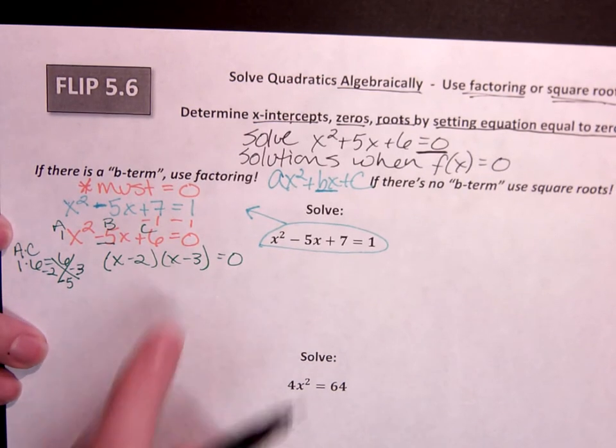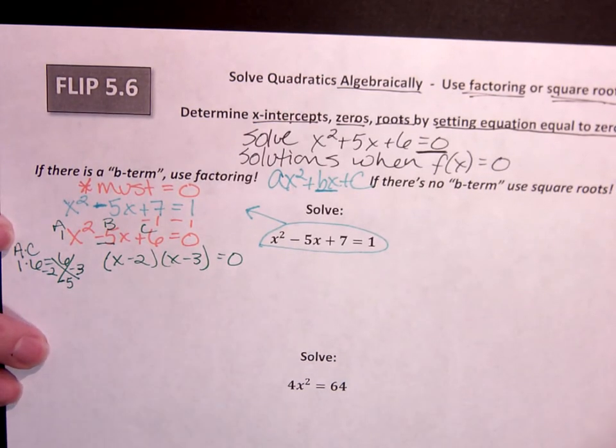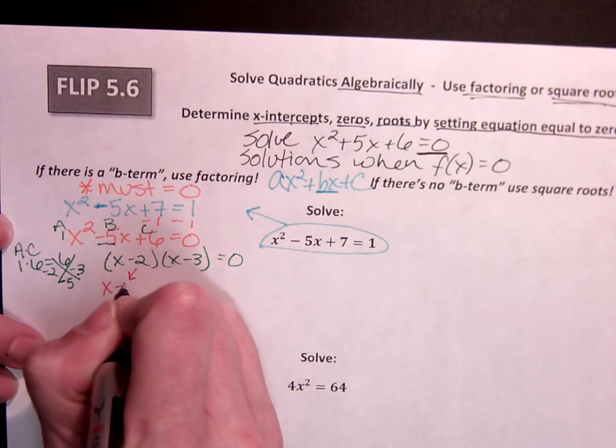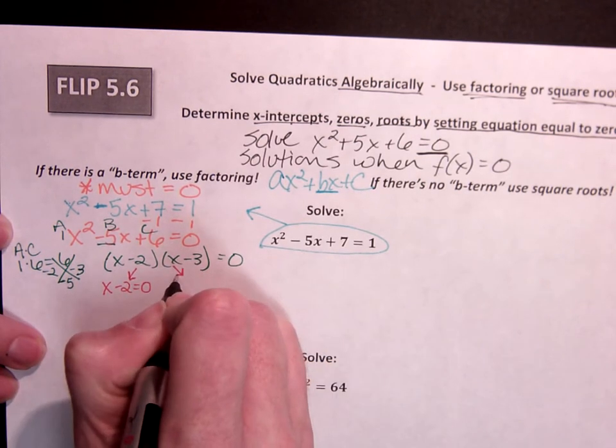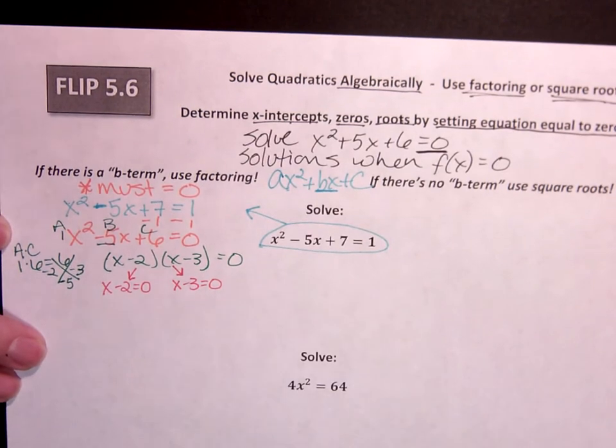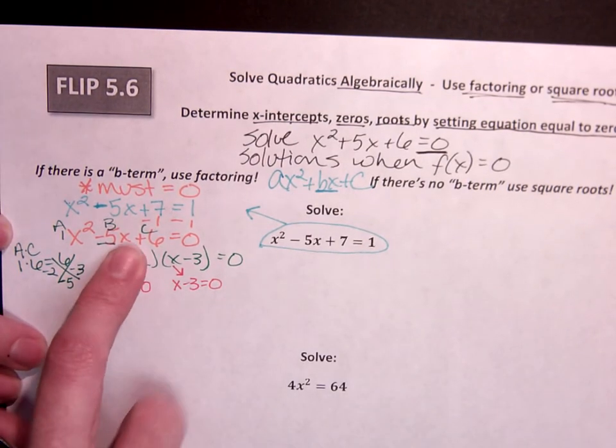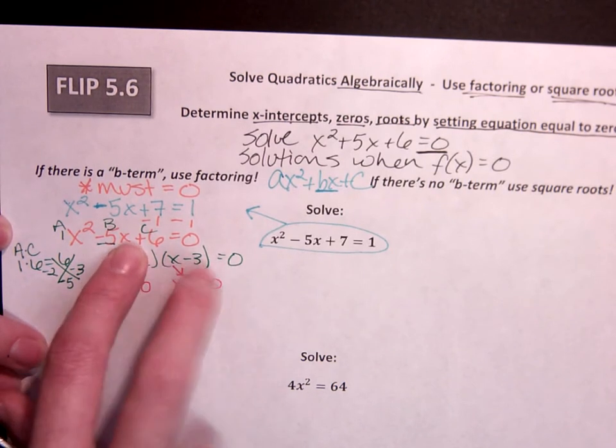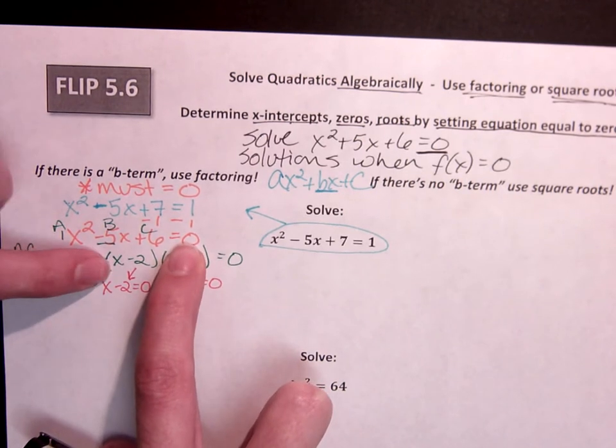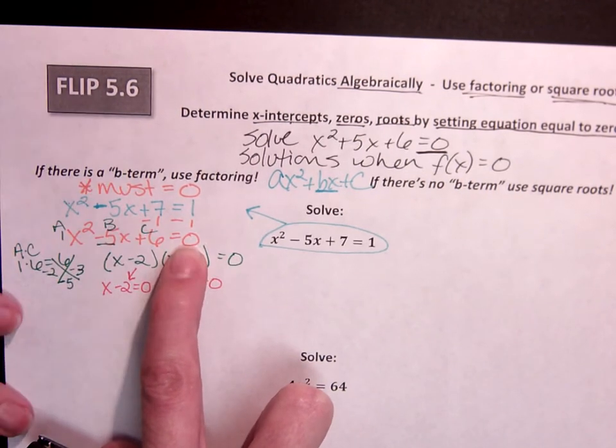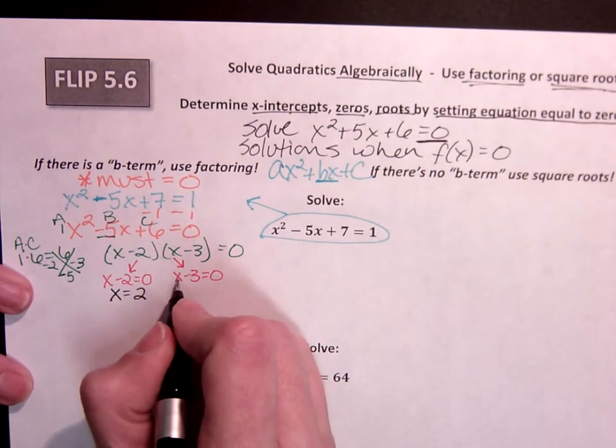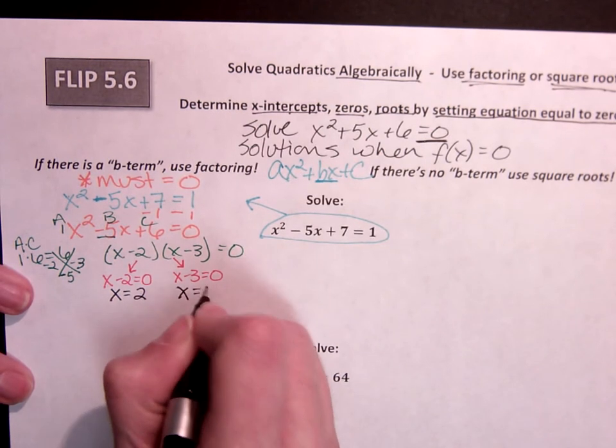Well, then we get to use something called the zero product property, which basically says anything times 0 is 0. What that means is I can split these up. x minus 2 equals 0 and x minus 3 equals 0. And when I solve these, because if I can make this be 0, it doesn't matter what that is because 0 times it is going to give me 0. Same thing here. If I can make this be 0, it doesn't matter what that is because the whole thing is going to equal 0. Well, x minus 2 equals 0. That means x equals 2. x minus 3 equals 0. That means x equals 3.